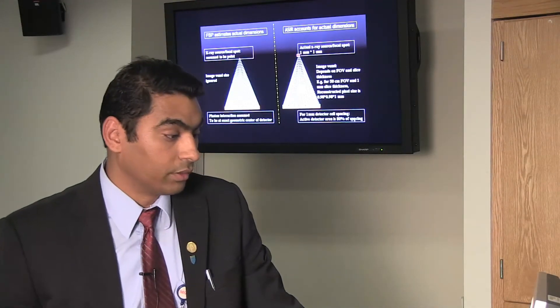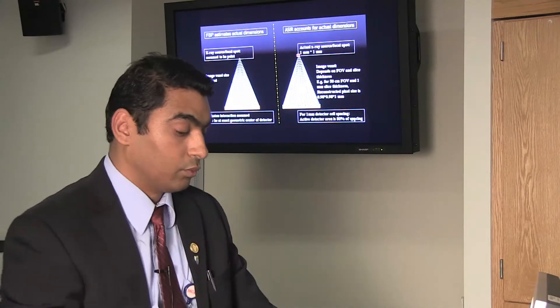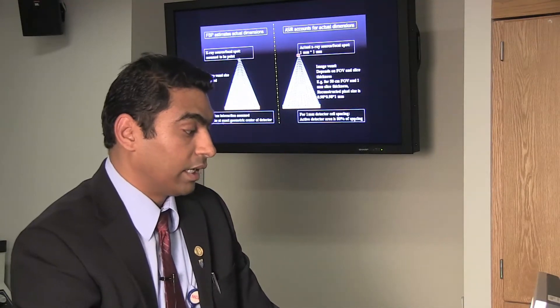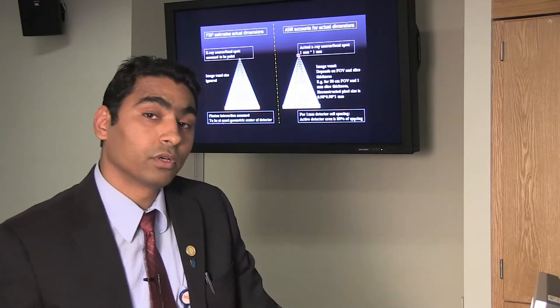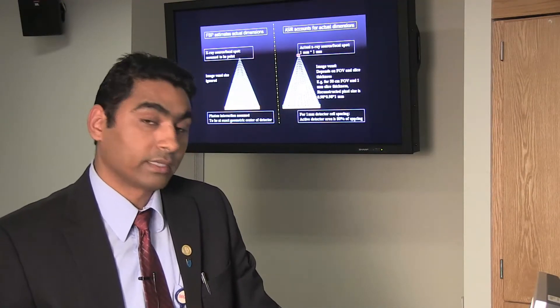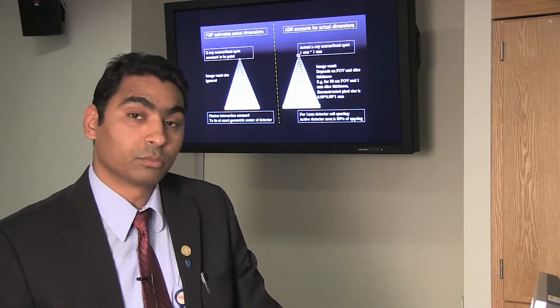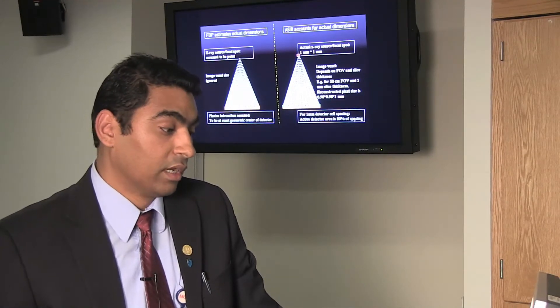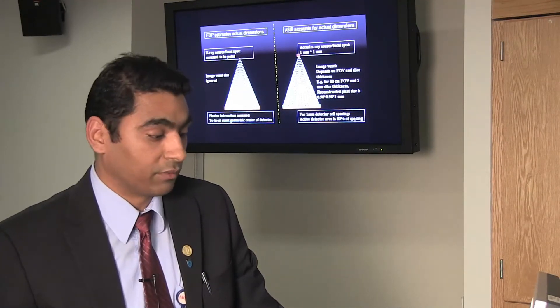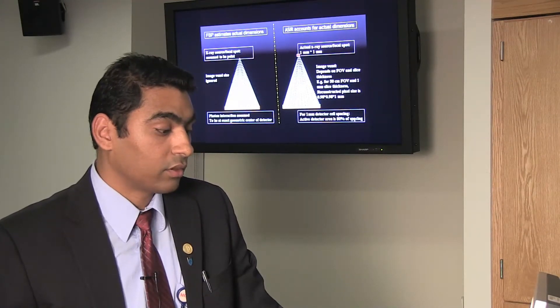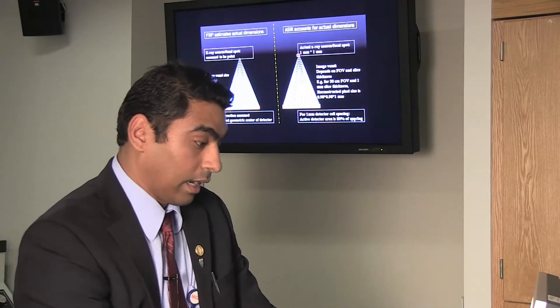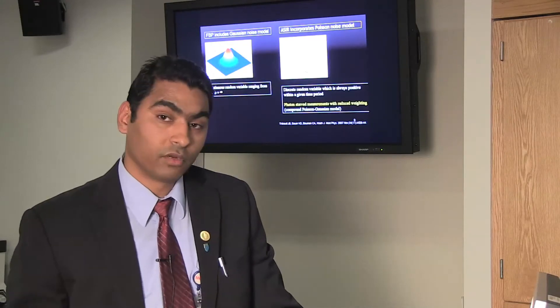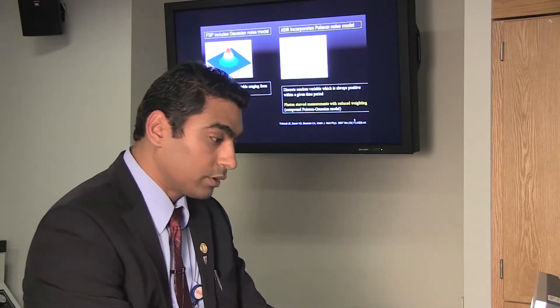Let's start with GE's ASIR. This algorithm assumes that filtered back projection treats the focal spot as an infinitely small point, ignores voxel size, and assumes photon interaction is at the geometric center. Whereas the ASIR algorithm takes into account the actual focal spot of 1x1 mm, accounts for image voxel size depending on field of view and slice thickness, corrects for inconsistencies in the 80% active detected area, and has a better noise model for photon quanta.